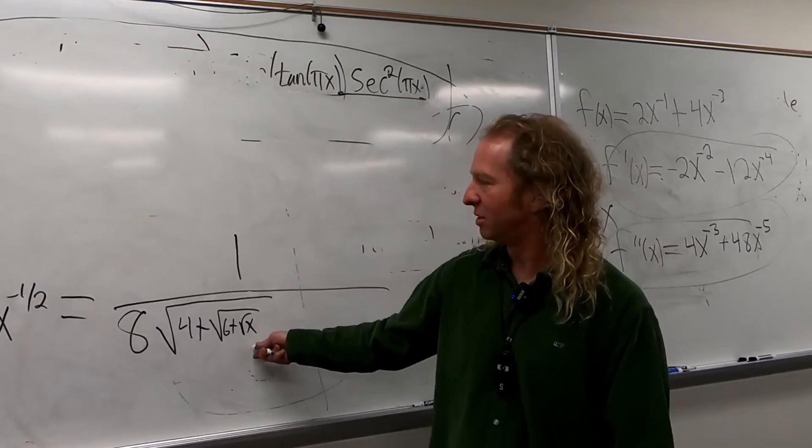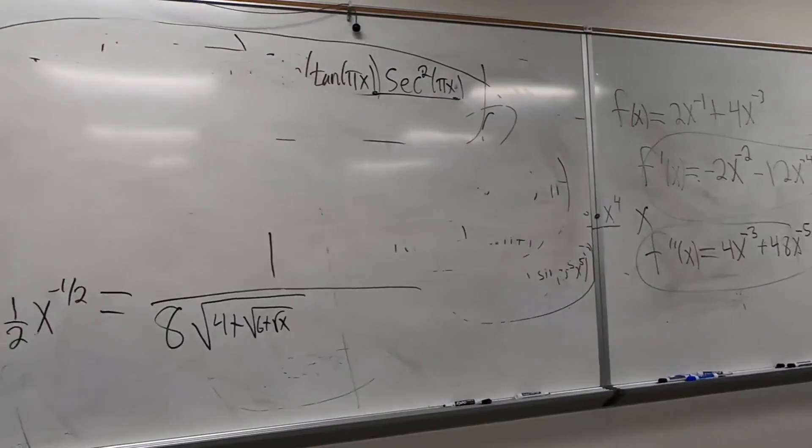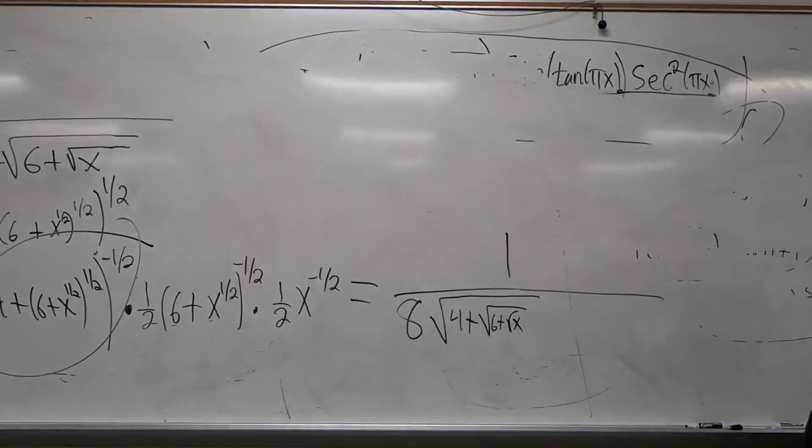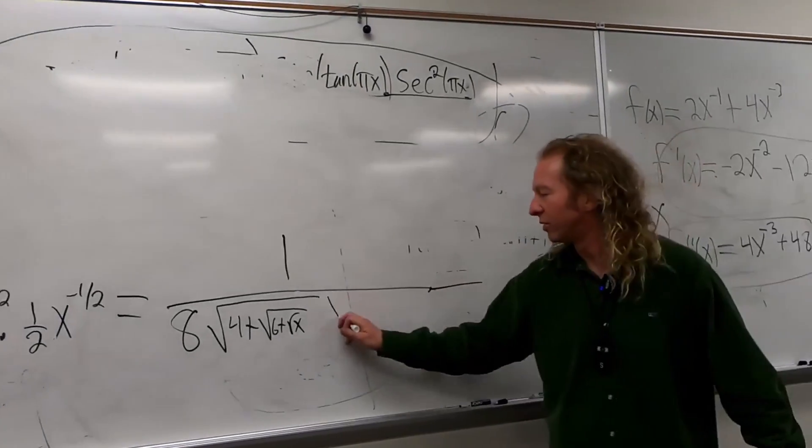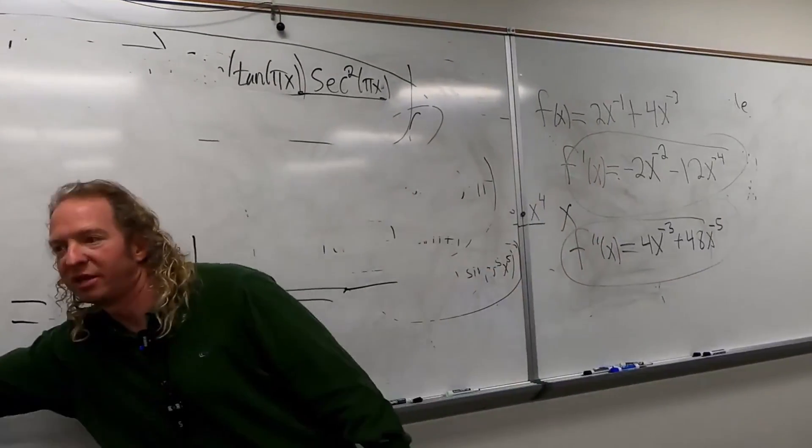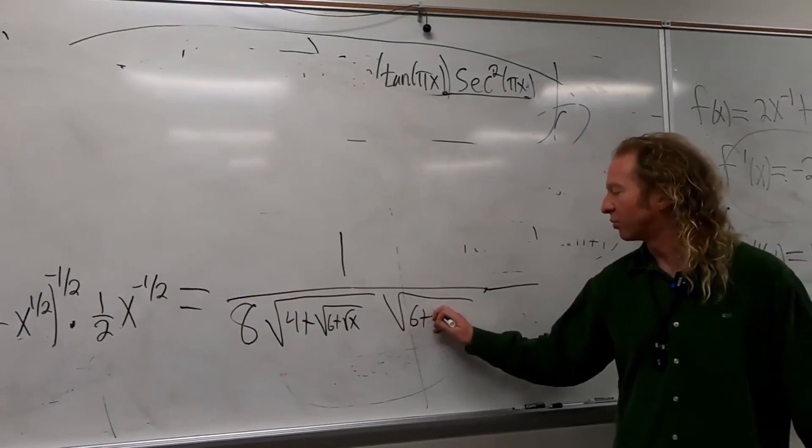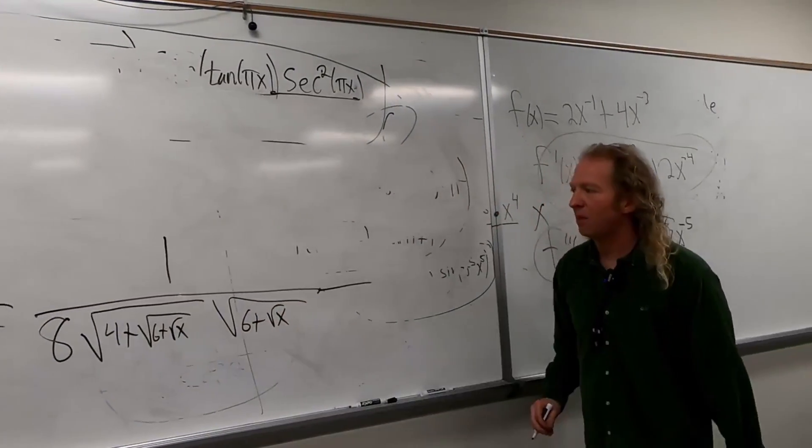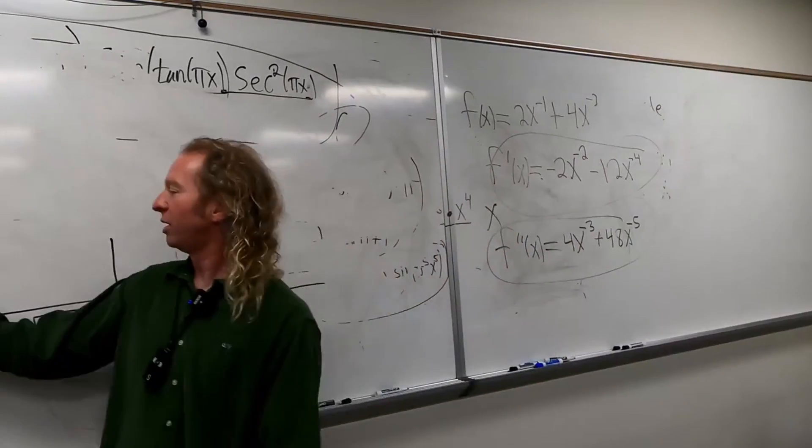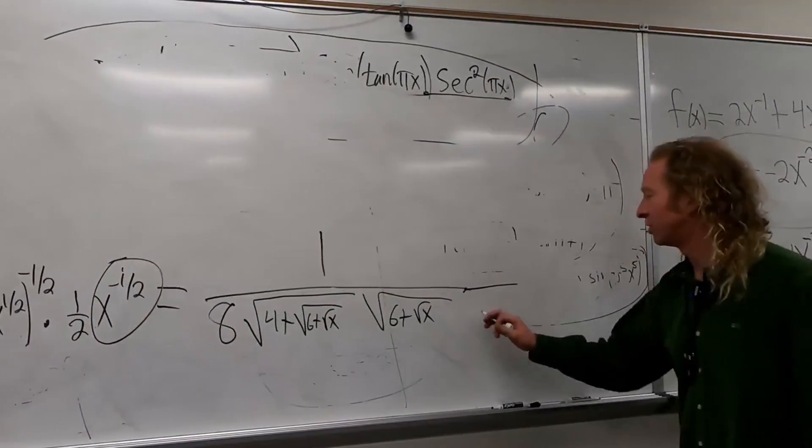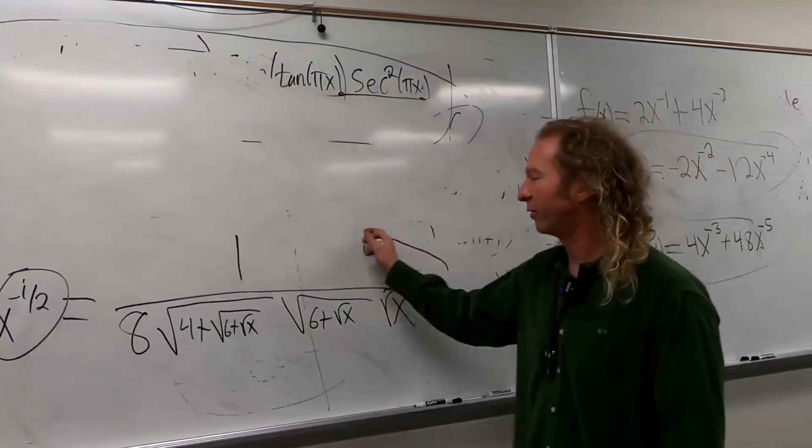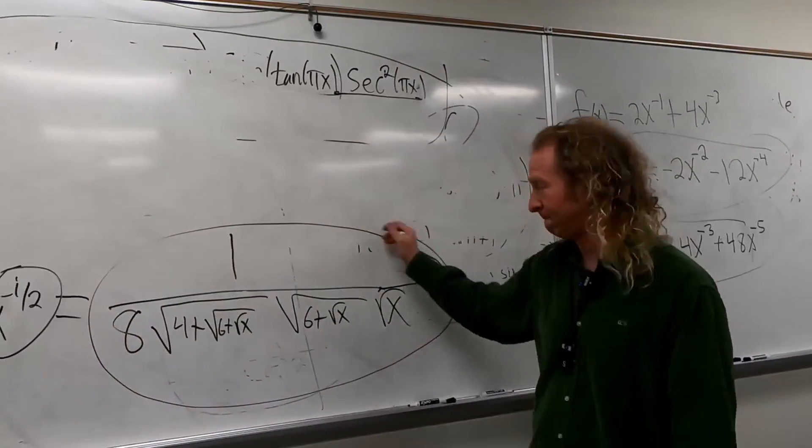And then we have this other square root here, six plus square root of x, six plus square root of x. And then we have this other square root here, which is just square root of x. Beautiful problem. Now we can be like that. Mm-hmm. It's perfect.